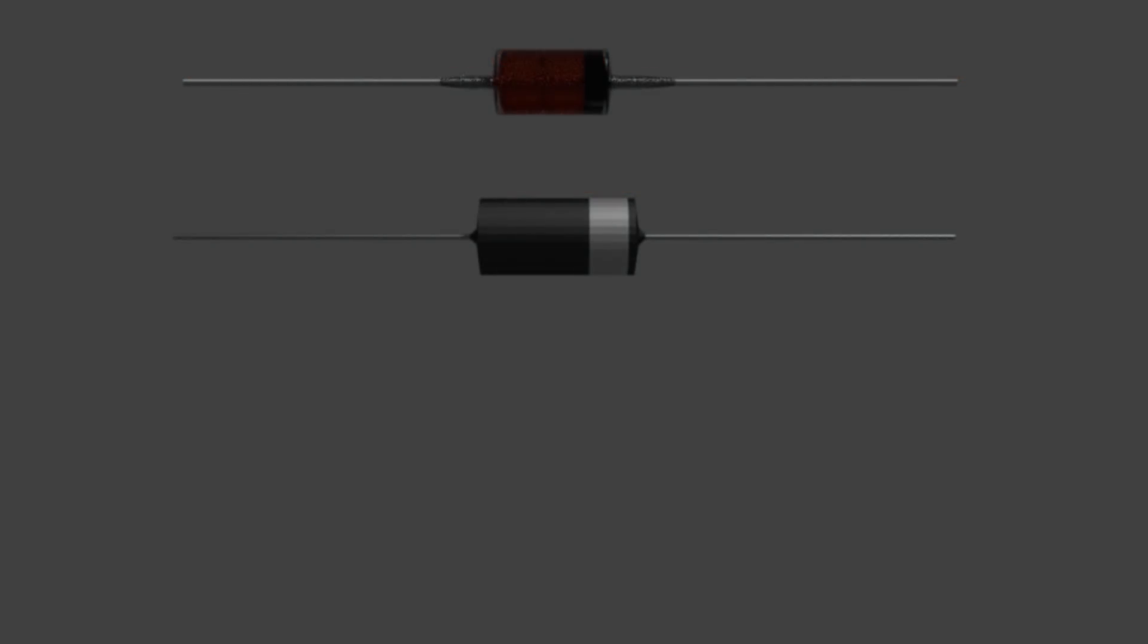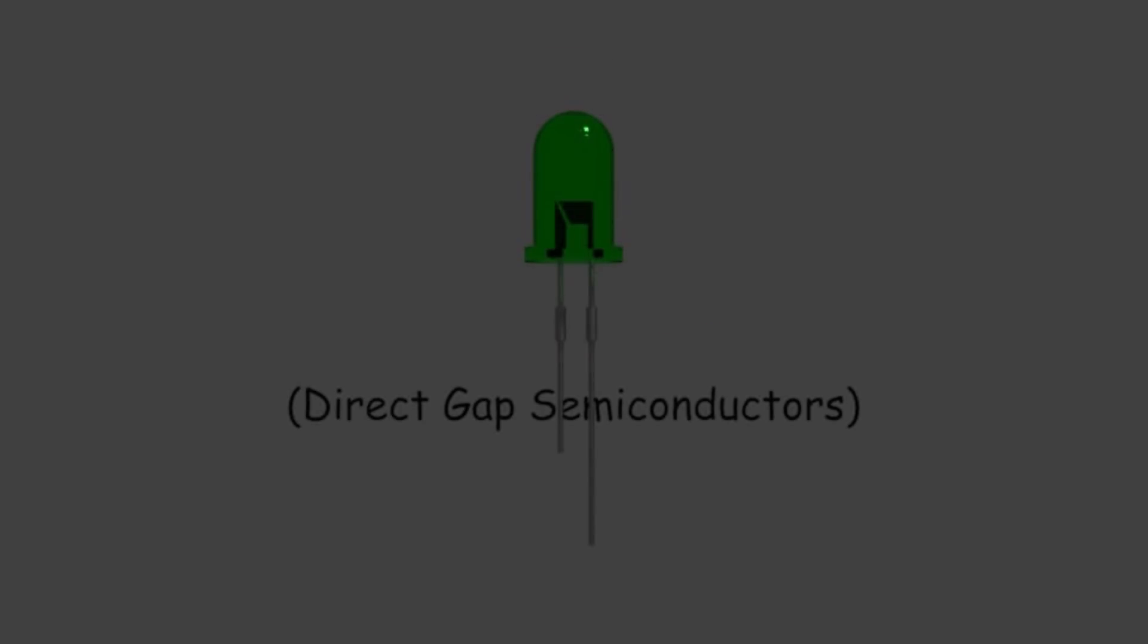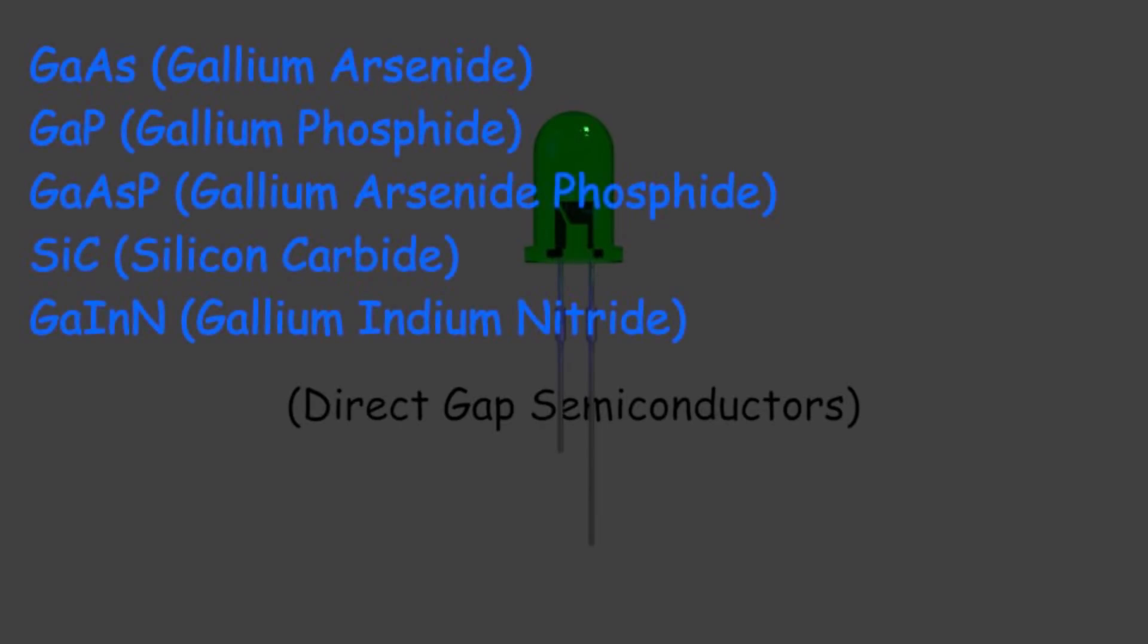Unlike normal diodes, which are made from either germanium or silicon, the indirect gap semiconductor materials, light emitting diodes are made from direct gap semiconductor, compounded such as gallium arsenide, gallium phosphide, gallium arsenide phosphide, silicon carbide, gallium indium nitride.